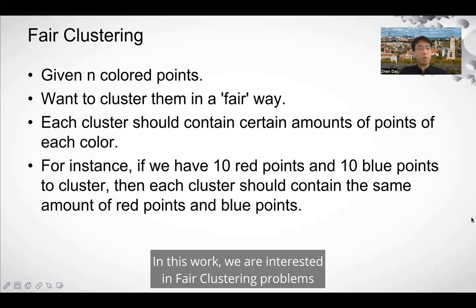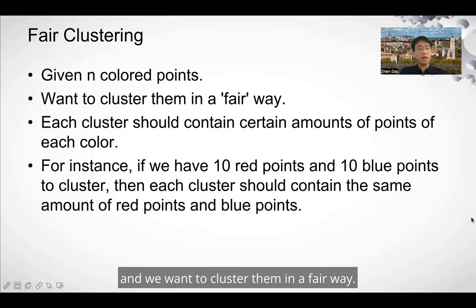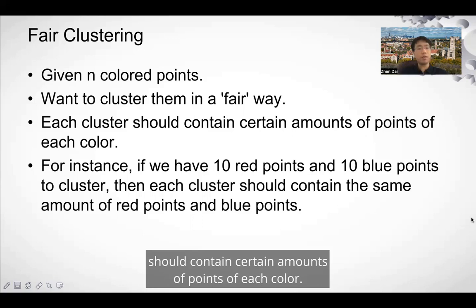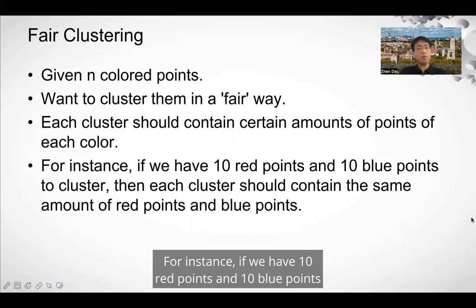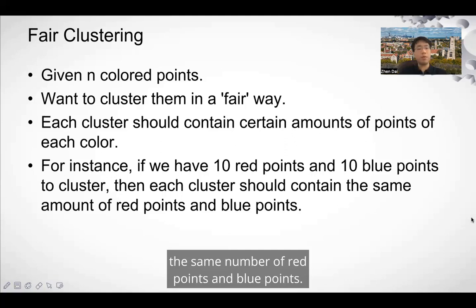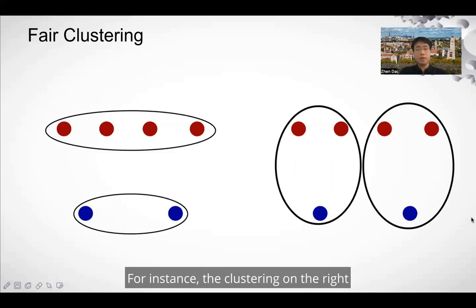In this work, we are interested in fair clustering problems, where we are given n colored points and we want to cluster them in a fair way. Here, fairness means that each cluster should contain certain amounts of points of each color. For instance, if we have 10 red points and 10 blue points to cluster, then each cluster should have the same number of red points and blue points. The clustering on the right is a fair clustering, whereas the clustering on the left is not.